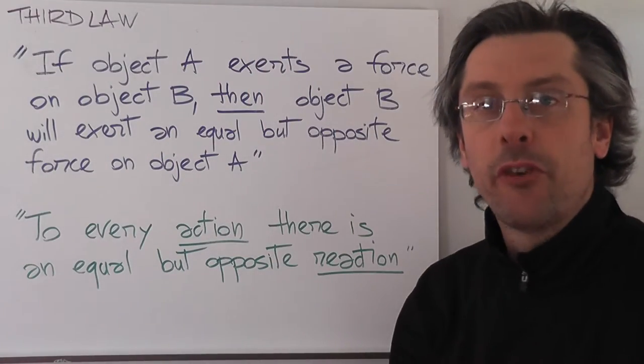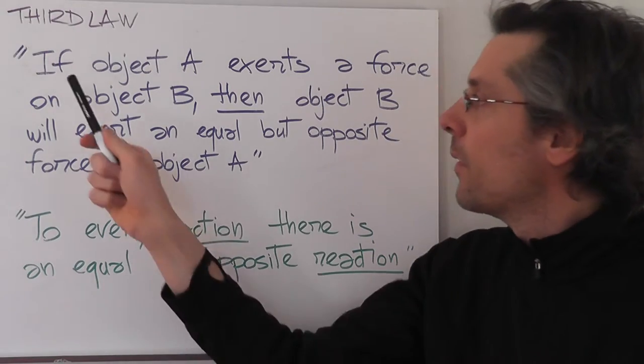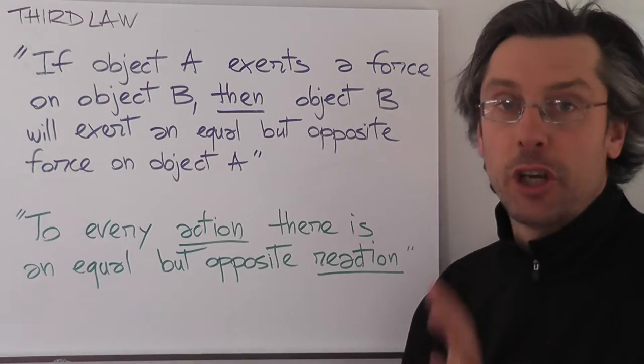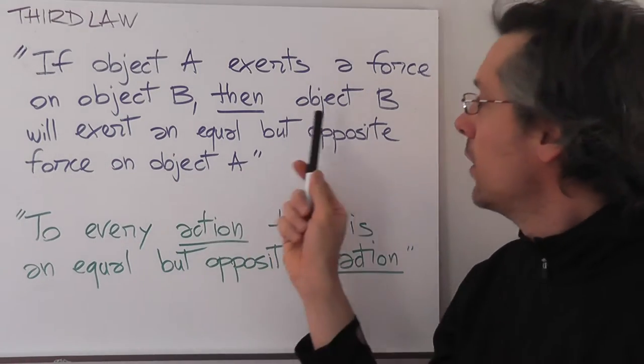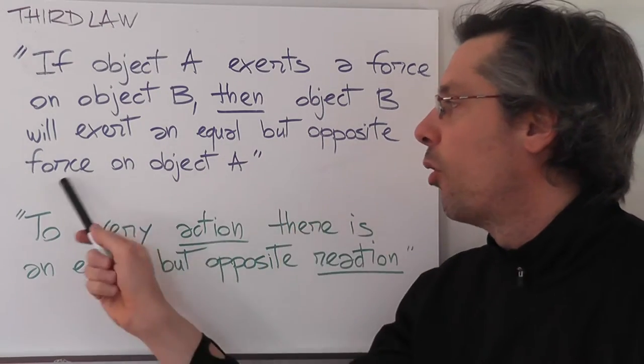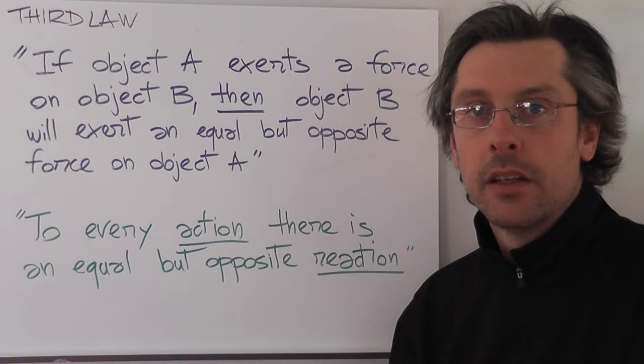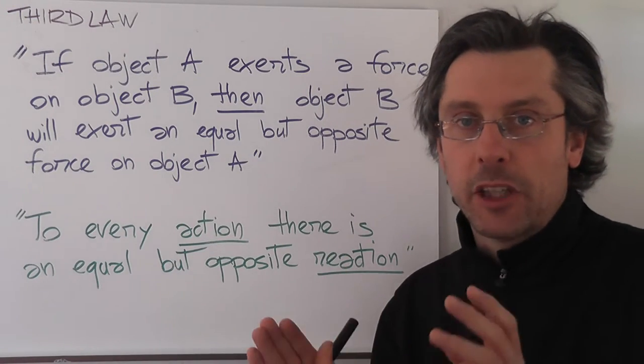So let's see the formulation, a way to formulate the third law of motion. If object A exerts, that means applies, a force on object B, then object B will exert an equal but opposite force on object A. So what does it mean? Equal and opposite means we'll have the same magnitude.